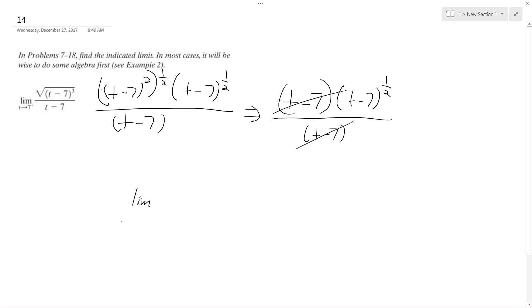And we have the limit as t approaches 7 from the right, and then we get t minus 7 raised to the 1 half. So if you approach it from the right, that means you're coming in from something just slightly larger than 7, and this just ends up being equal to 0.